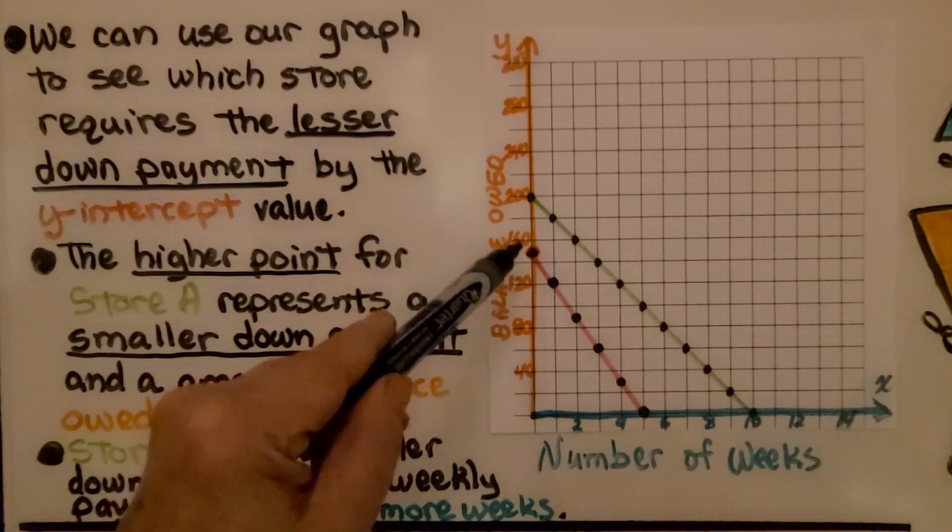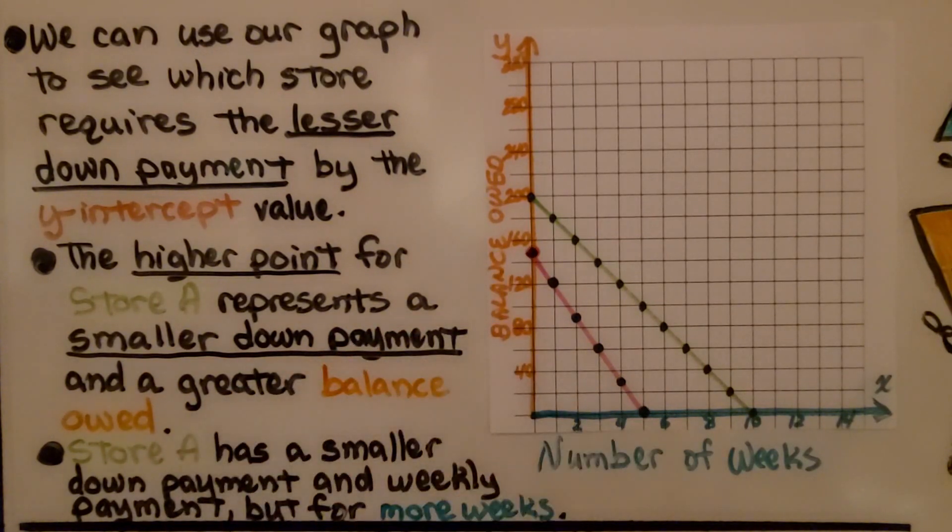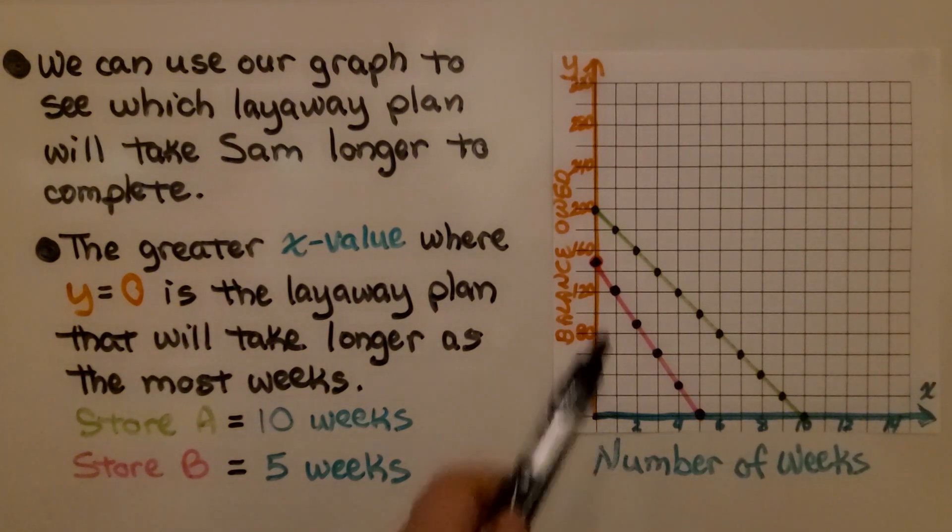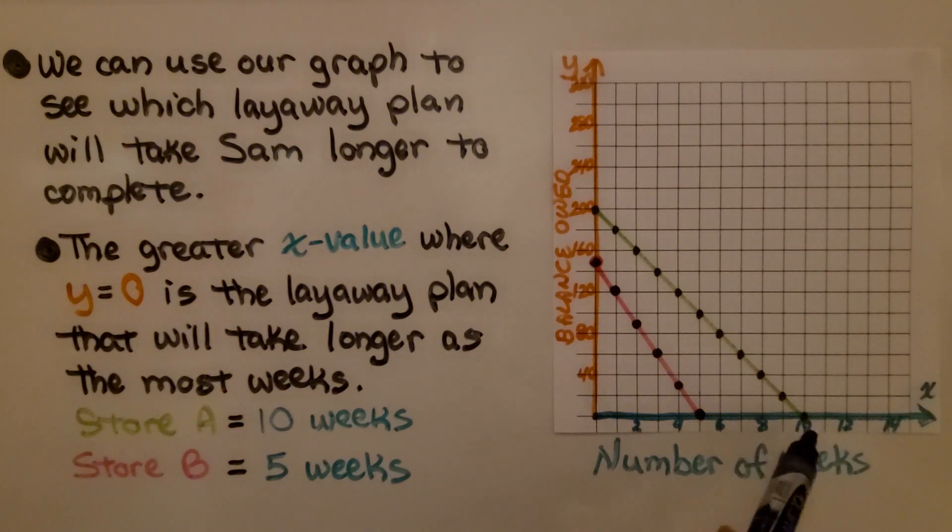Store B, we make greater payments, a greater down payment, and it's paid off quicker. We can use our graph to see which layaway plan will take Sam longer to complete. The greater x value where y equals 0 is the layaway plan that will take longer as the most weeks. We have a greater x value here, 10, where y is 0. Store A is going to take 10 weeks. Store B is only going to take 5 weeks.